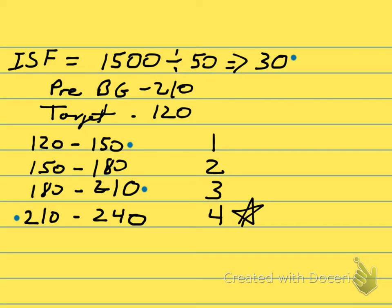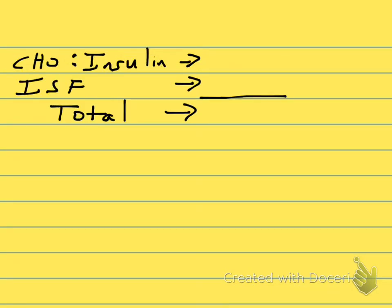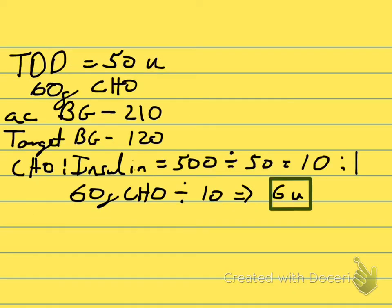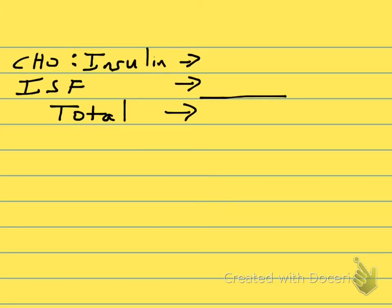So, we have our carbohydrate-to-insulin ratio result of 6 units to cover the food we're about to eat, and our insulin sensitivity factor correction of 4 units because we're hyperglycemic before the meal. Adding these two together, our total dose for this meal is 10 units. That's basically how you do these problems — thanks for listening.